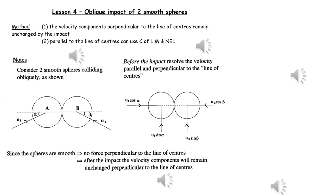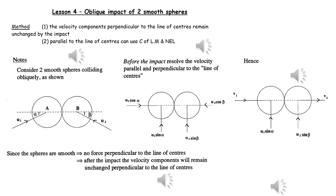Since the spheres are smooth, there is no force perpendicular to the line of centres, and therefore after the impact the velocity components perpendicular to the line of centres will remain unchanged. So after the collision, the velocity components perpendicular to the line of centres are the same as they were before. Parallel to the line of centres, there are unknown velocities — in this case V1 and V2.